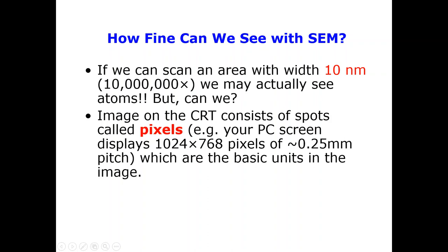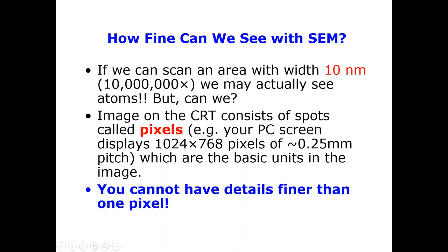To answer this, we must remember that the image on the CRT consists of spots called pixels (faxels). A pixel is basically the basic unit of the image. Consider the image on your PC screen — it has dimensions of 1024 × 768 pixels, corresponding to a 0.5 or 0.25 millimeter pitch. You cannot have detail finer than one pixel.